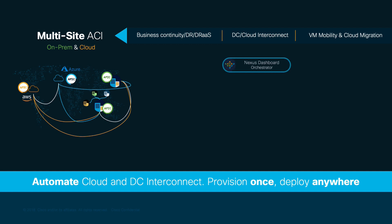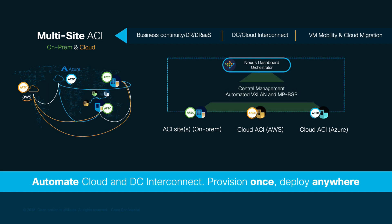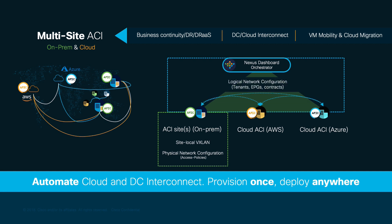When we run Nexus Dashboard and enable its Orchestrator service, we can onboard multiple ACI sites by simply providing each APIC or APIC cluster credentials. Then, Orchestrator will fully automate data center and cloud interconnect by creating MP-BGP EVPN VXLAN networks across them. Physical network configuration and local VXLAN automation still happens within each ACI site. Nexus Dashboard is simply dealing with the interconnect between those sites and clouds, and centralizing the logical network configuration for all of them, as you will see in the configuration chapters.